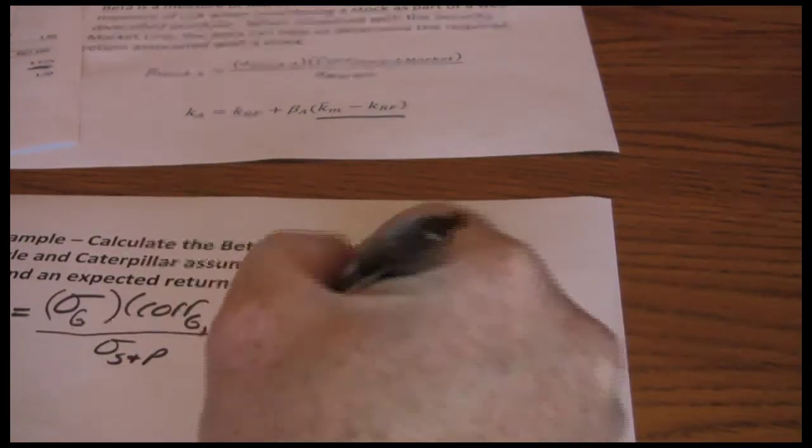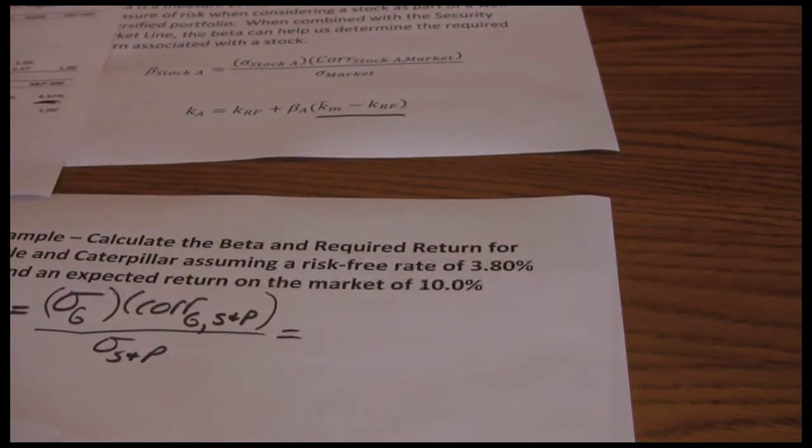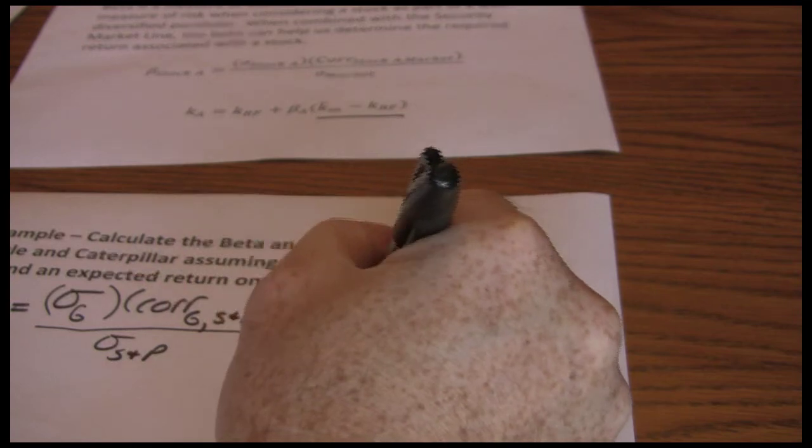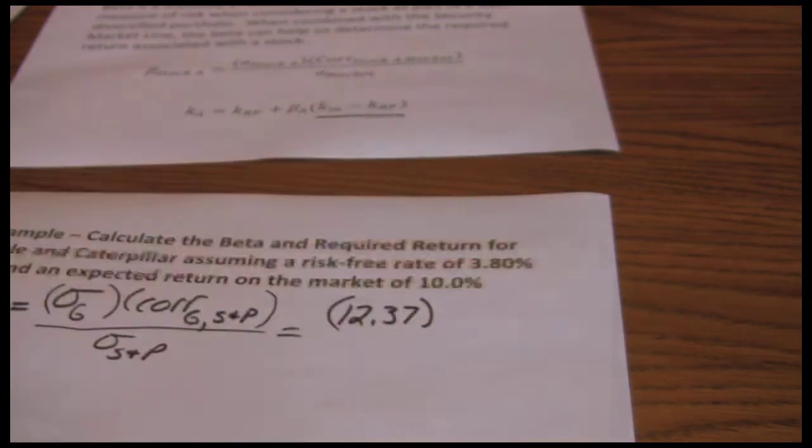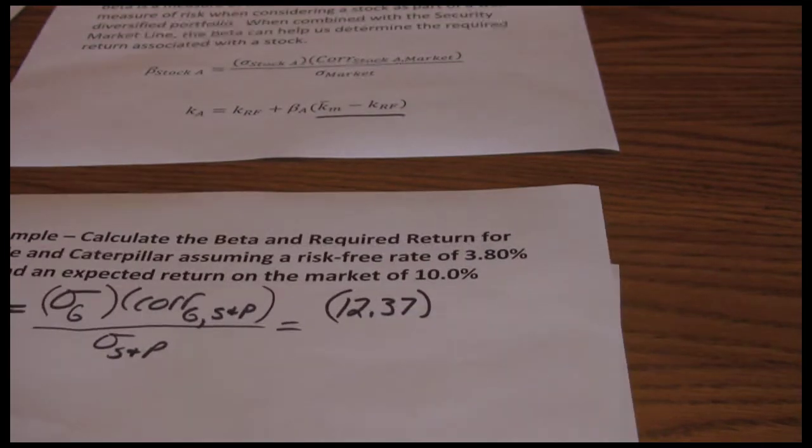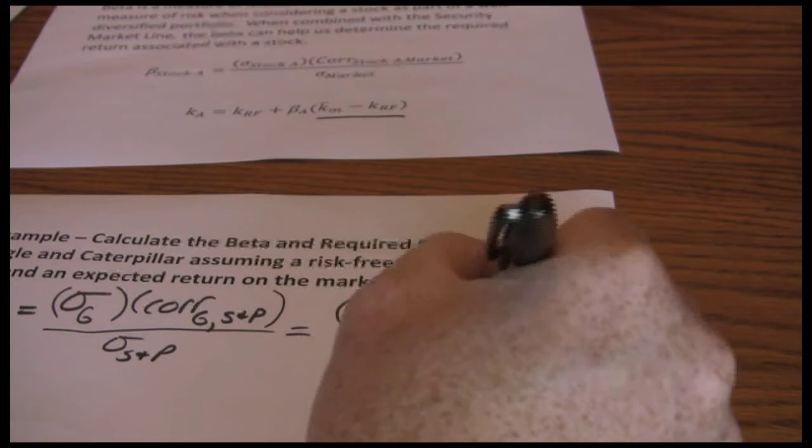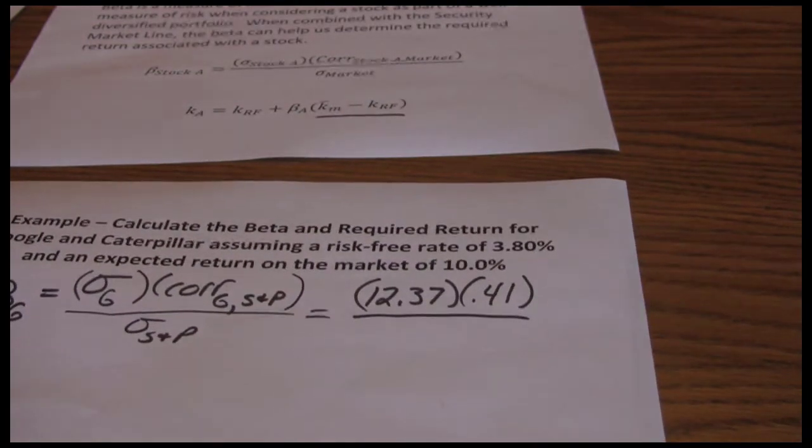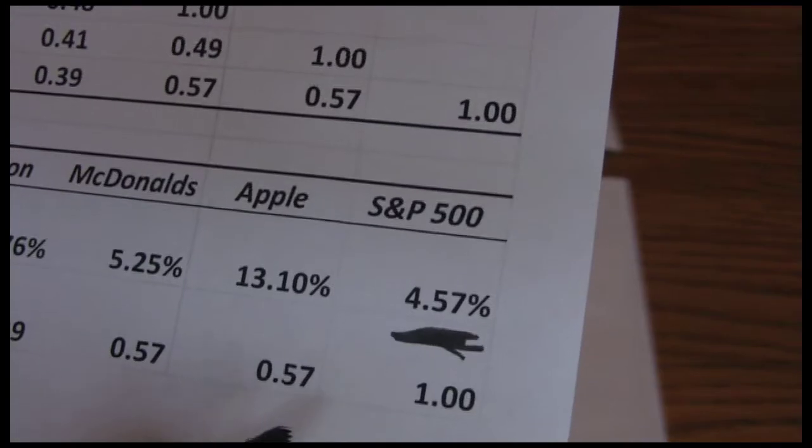We have the standard deviation for Google. Again, 12.37% times the correlation between Google and the market, 0.41 divided by the standard deviation for the market, which is 4.57.